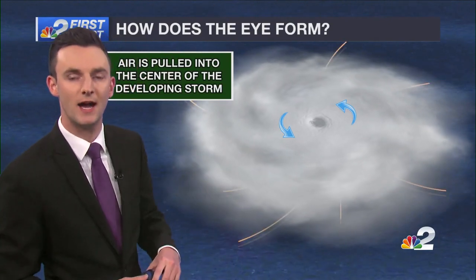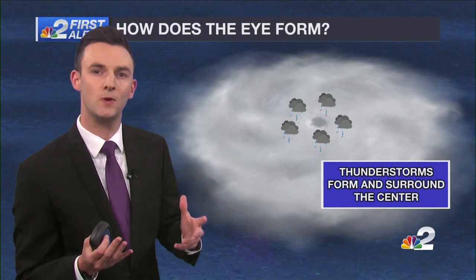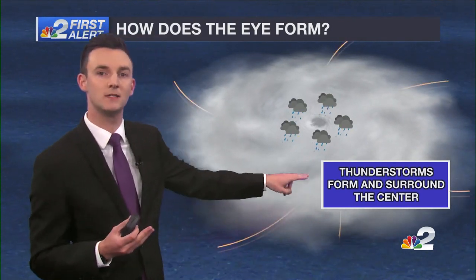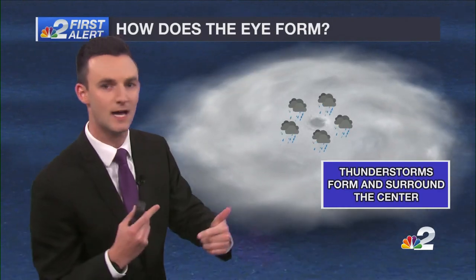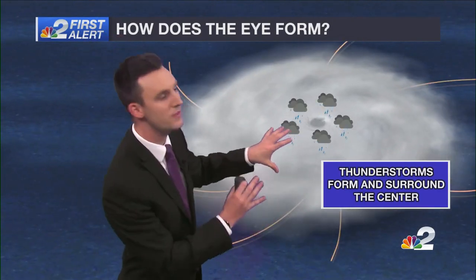Now you've got your storm. Once that air rises, it starts to create clouds, and eventually those clouds lead to thunderstorms. The stronger these thunderstorms are, the stronger that hurricane becomes, and the more well-defined the eye of the storm becomes.